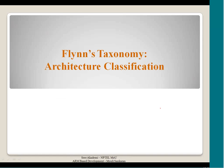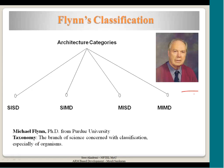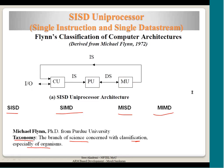The processor architecture classification was given around 1965 and later processors fall into different categories. This classification done by Dr. Michael Flynn gives you a broader view of where a particular processor belongs. This is called taxonomy — a branch of science concerned with classification. Here we are using it for processor architecture, and these are the 4 broad categories that any processor in the world will fall under.